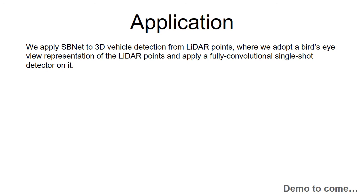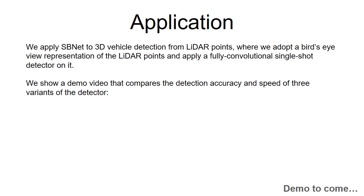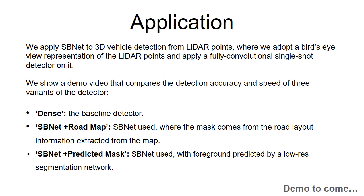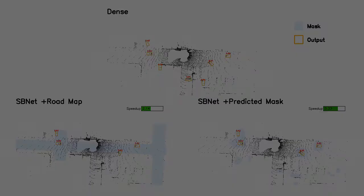We show a demo video that compares the detection accuracy and speed of three variants of the detector. First is the dense detector, which is our baseline. Second is SBNet with the roadmap, where the mask comes from the road layout information extracted from the map. Third is SBNet with predicted mask, where the foreground is predicted by a low-resolution segmentation network.